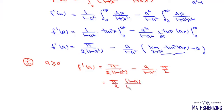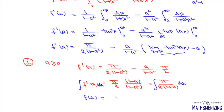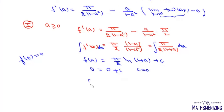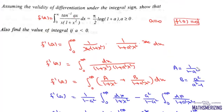In the numerator we have (1−a) and in the denominator (1−a²). Since 1−a² = (1−a)(1+a), the (1−a) factors cancel, giving f'(a) = π/(2(1+a)). Now we integrate with respect to a: f(a) = (π/2)log(1+a) + C. Applying the initial condition f(0) = 0, we get 0 = 0 + C, so C = 0. Therefore, the integral equals (π/2)log(1+a) when a ≥ 0, which is what we needed to prove.